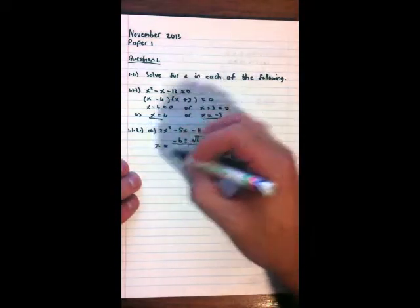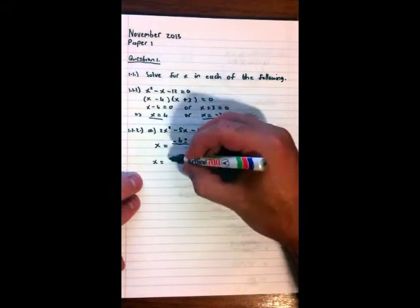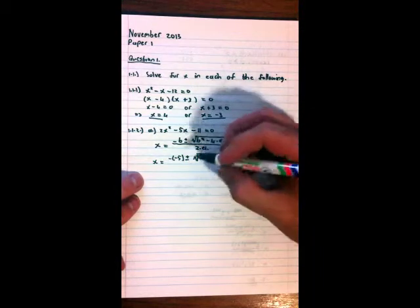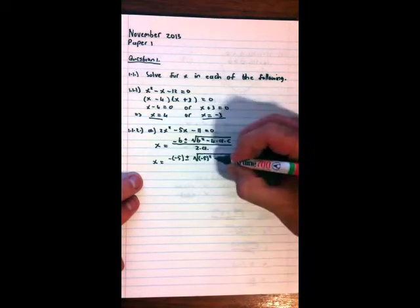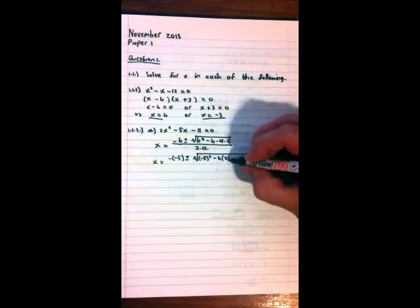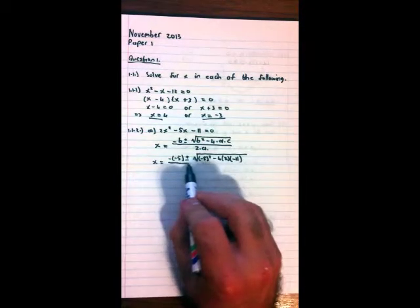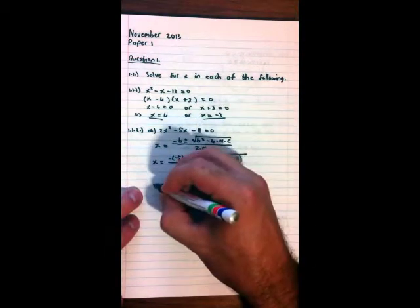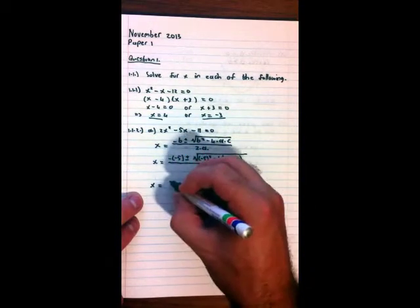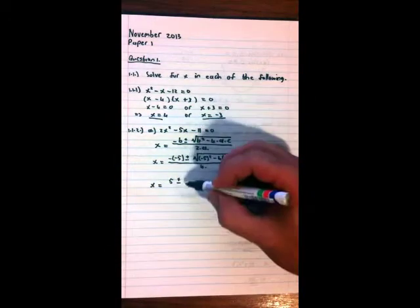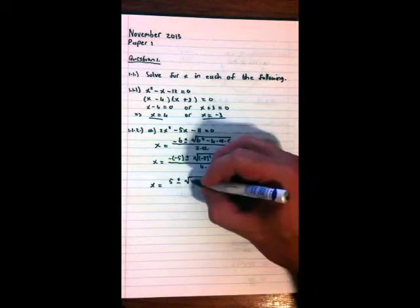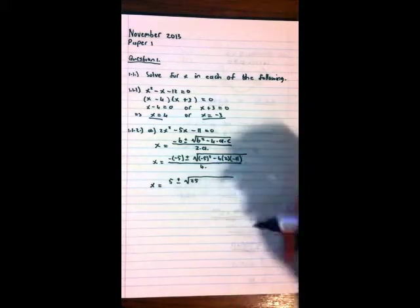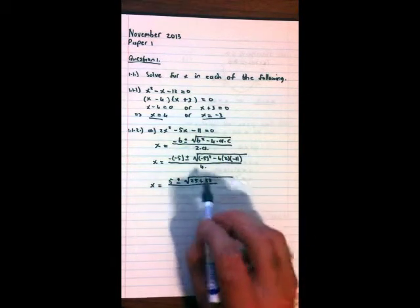Okay, so we can substitute that in, which will give us x = -(-5) ± √((-5)² - 4 × 2 × (-11)) all over 2 × 2. Okay, let's work that out. x = 5 ± √(25 + 88) over 4. -11 times 2 is -22, times -4 is 88, over 2 times 2 is 4.